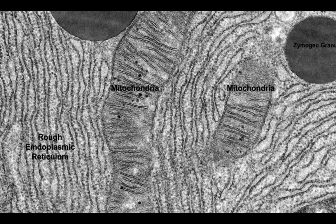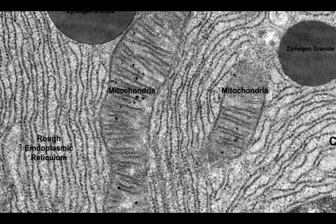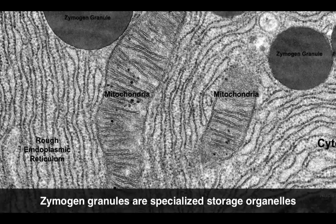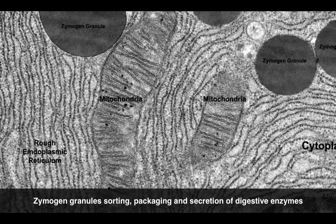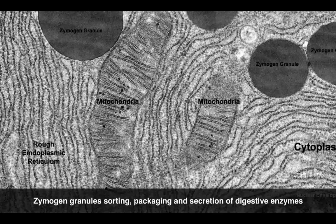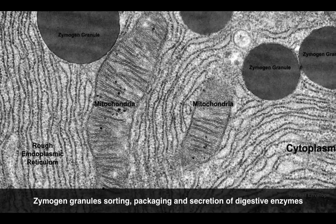In these exocrine glands of the pancreas you may also observe specialized storage organelles called zymogen granules. They allow for the sorting, packaging, and secretion of the digestive enzymes produced by the pancreas.